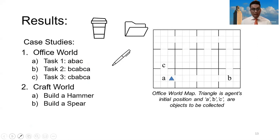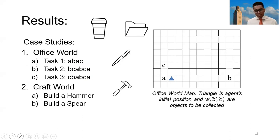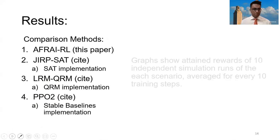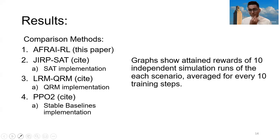Our second case study is craft world, which simulates a Minecraft environment where the agent has to build a hammer and build a sphere. We compared our algorithm against JIRP and LRM — two state-of-the-art finite reward automaton learning systems — and PPO2, which is a deep reinforcement learning algorithm. The graphs show rewards attained from 10 independent trial runs, where we average the rewards every 10 training steps.